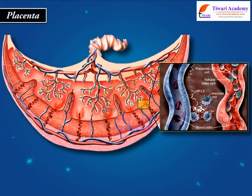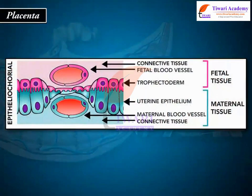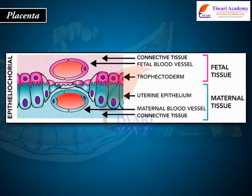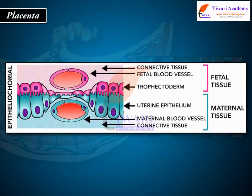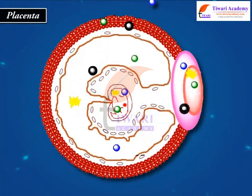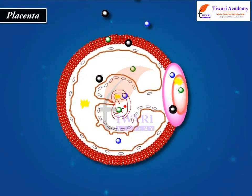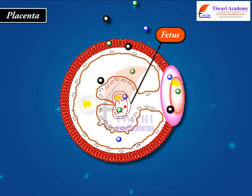Maternal blood flows into the placental intervillus space where solutes, nutrients, and oxygen diffuse across the transporting epithelium to the fetal circulation, while fetal metabolic waste products are removed. The separation of circulation helps to control solute transport and protects the fetus from toxins.